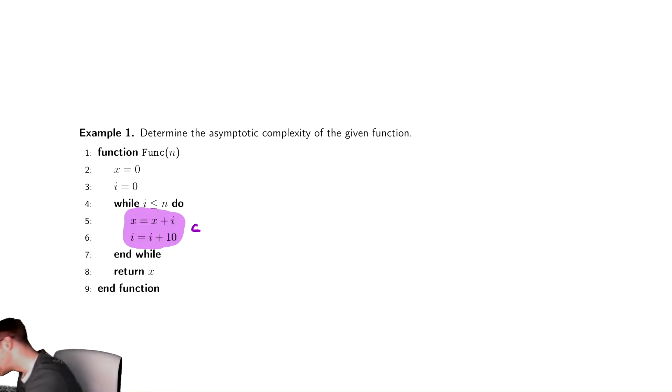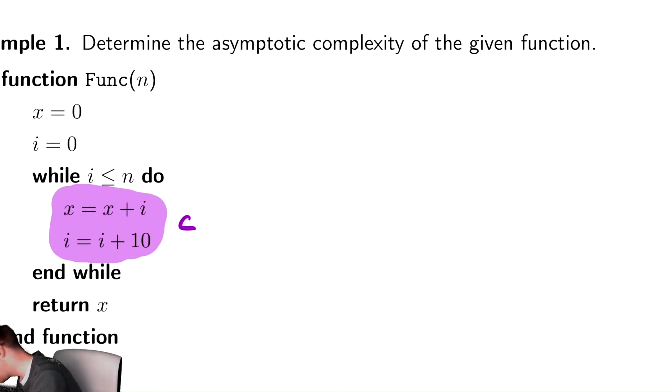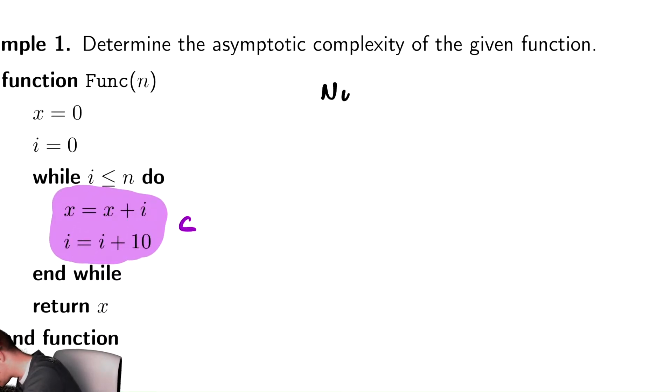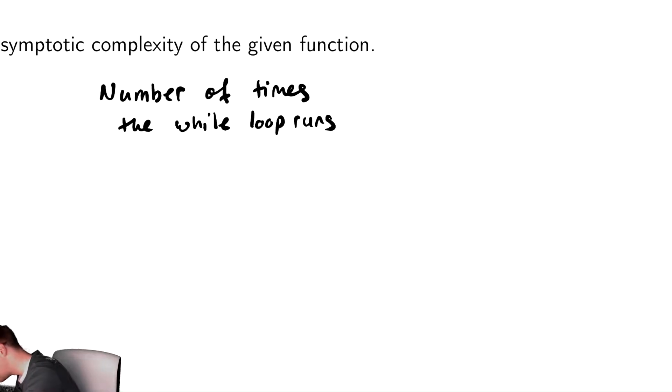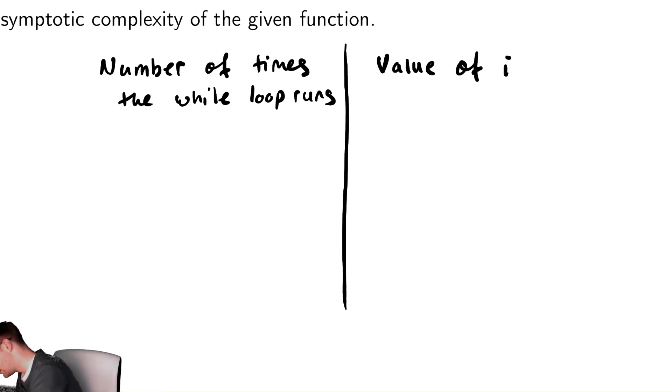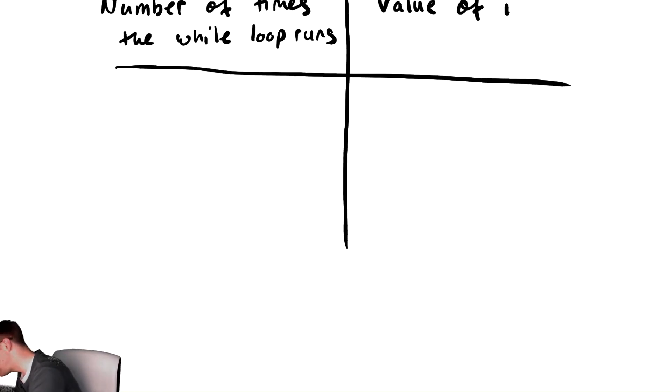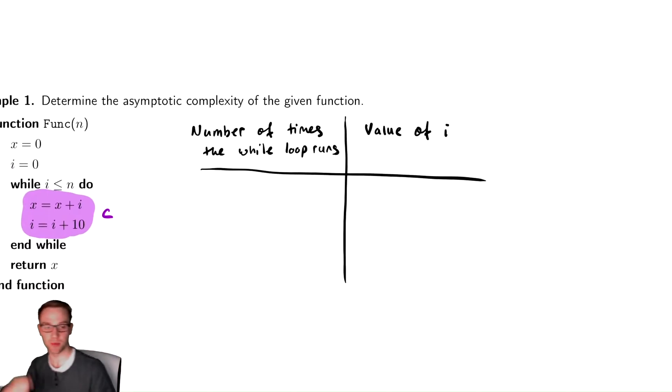So how are we going to do that? Well, let's sort of manually track things. We're going to keep track of the number of times the while loop runs, and also the value of the variable that's dealing with the while loop. So the value of i. And we're going to try to see what happens as this code proceeds.